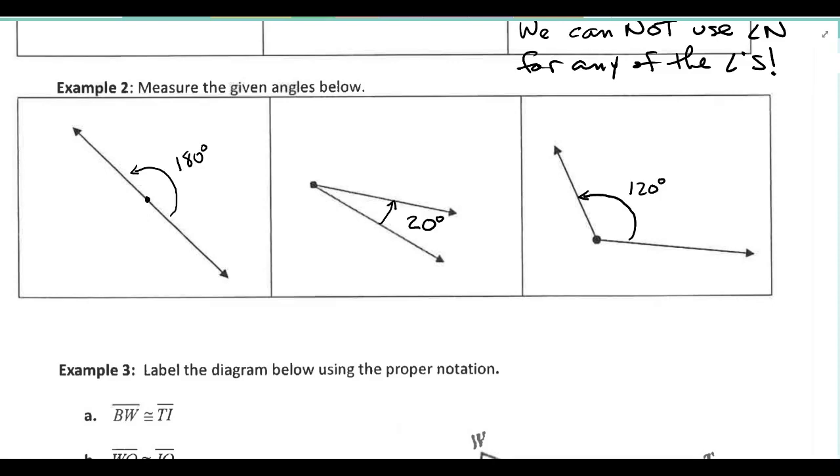Alright, so here are the three measurements that I came up with. Hopefully you came up with something very close or similar, maybe within a degree or two. This first angle is an interesting angle. It's 180 degrees. So we may think of this as a straight line, but we could also think of it as an angle. So this is actually called a straight angle and it measures 180 degrees. So if I wanted to name the angle, I'd have to put a couple more points, one on each side. We could label them XYZ.